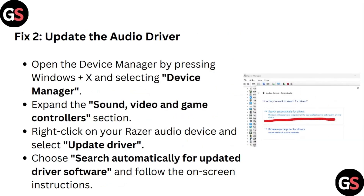Step 2: Update the audio driver. Open the Device Manager by pressing Windows + X and selecting Device Manager. Expand the Sound, Video and Game Controllers section. Right-click on your Razer audio device and select Update Driver. Choose 'Search Automatically for Updated Driver Software' and follow the on-screen instructions.